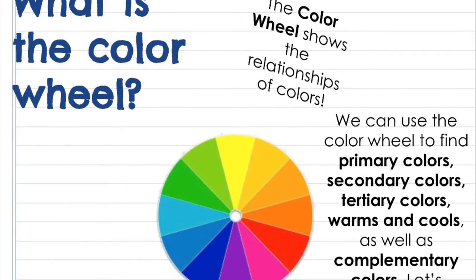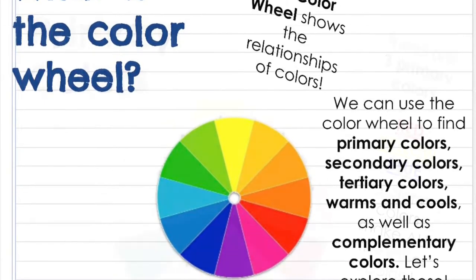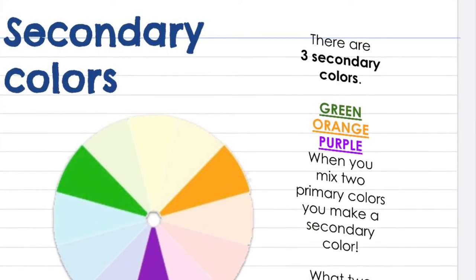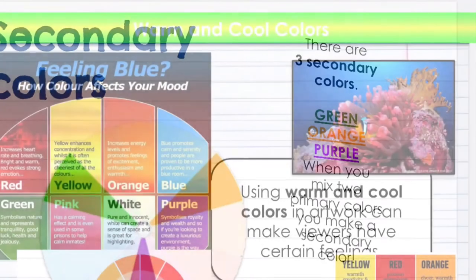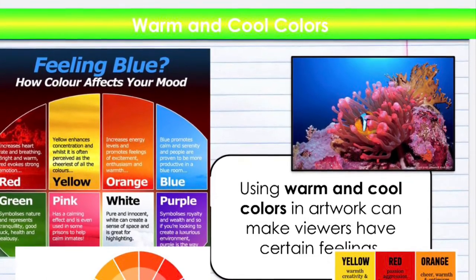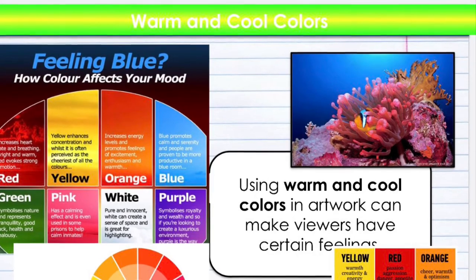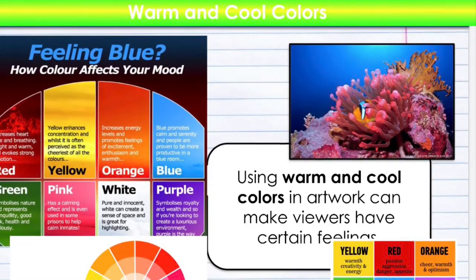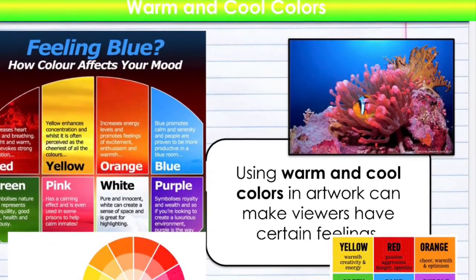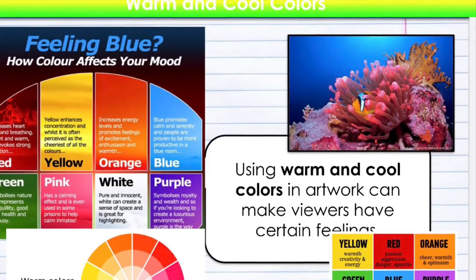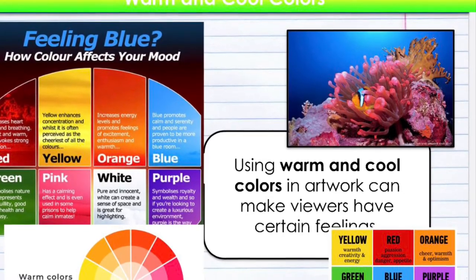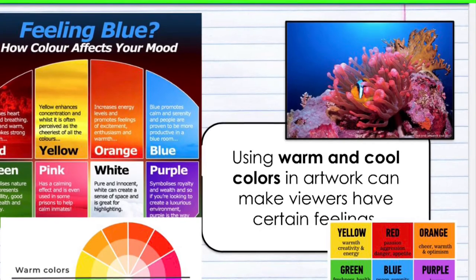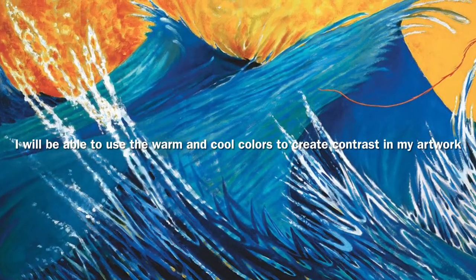The color wheel is a tool that artists use whenever they're making artwork, so they can understand and review color relationships. Everyone should know the three primary colors — red, yellow, and blue — which can be used to make the three secondary colors: orange, green, and purple. But did you know there are also warm and cool colors? Color is so powerful that it can actually affect your feelings. Blue can be associated with sadness, but it can also make you feel calm and serene. Yellow can enhance concentration and is thought of as a happy or warm color. One side of the color wheel has yellow, orange, and red — those are warm colors. The other side has the cool colors: green, purple, and blue. Our goal is to use warm and cool colors to create a seascape that has contrast.